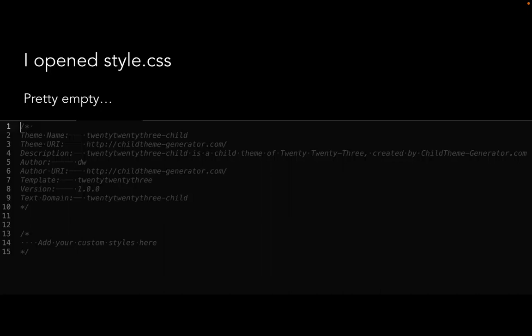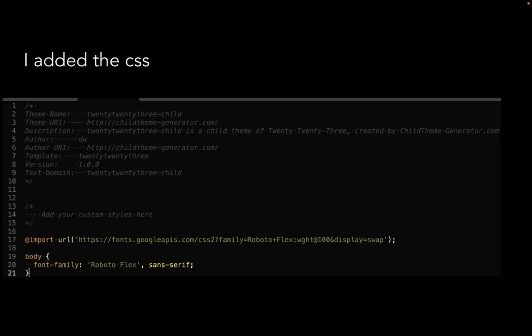This was not the behavior I expected. I thought for sure that any edits I'd done in the site editor would be maintained, since all I was doing with the child theme was importing a single font. But all of my styles were thrown out the window. It still doesn't make sense to me. I then tried copying the theme.json file from the parent 2023 theme into the child theme — and it didn't matter. It still didn't retain any of my custom work.